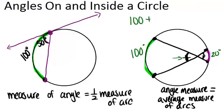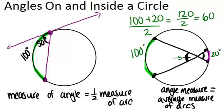So 100 plus 20 divided by 2. That's how you find an average of two numbers, add them up and divide by 2. So that would give us 120 divided by 2, which is 60 degrees.